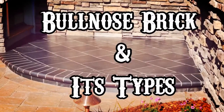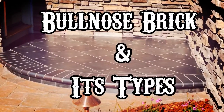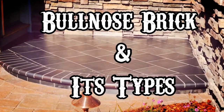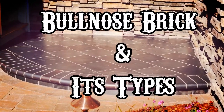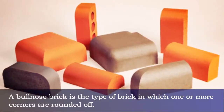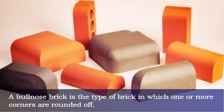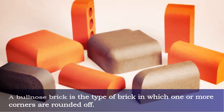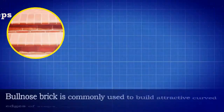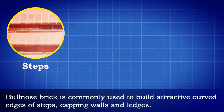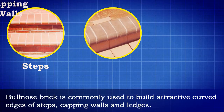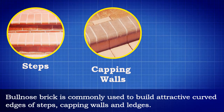Bullnose brick and its types. A bullnose brick is a type of brick in which one or more corners are rounded off. Bullnose brick is commonly used to build attractive curved edges of steps, capping walls, and ledges.